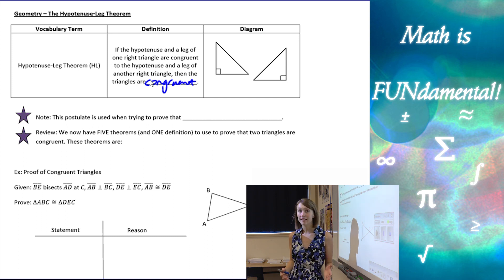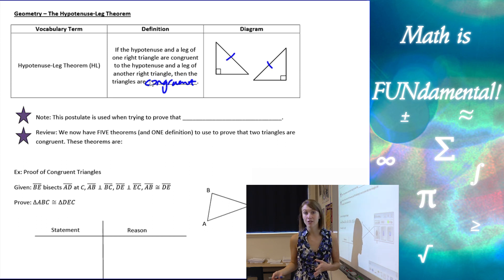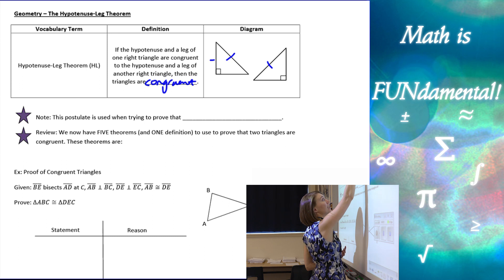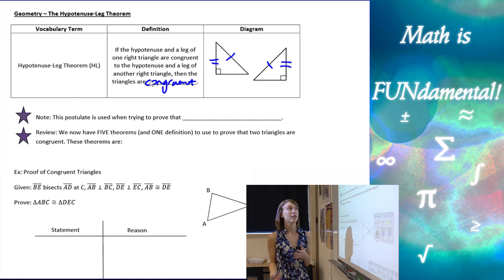On a diagram, what that looks like is if we have the hypotenuse of one congruent to the hypotenuse of the other, and we have a leg congruent to another leg of the other triangle, then those two triangles are going to be congruent.